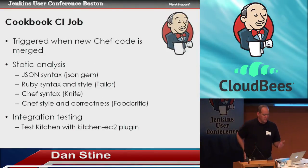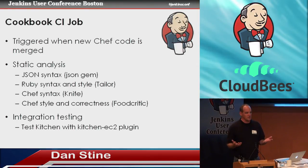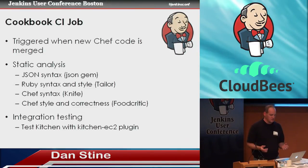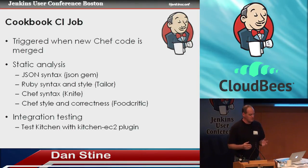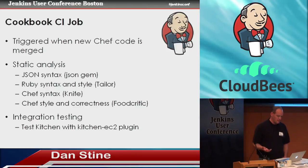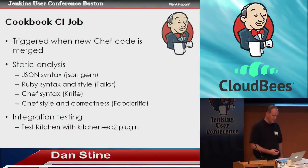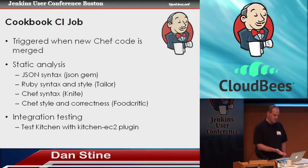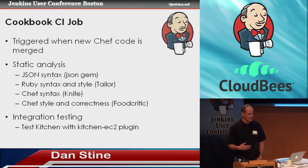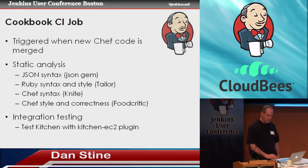In the Java world we have tools like Checkstyle and FindBugs for static analysis. In the Chef and Ruby ecosystem we have corresponding tools: we can check JSON syntax, Ruby syntax, and Chef-specific syntax with Food Critic. When you name a tool 'Chef,' it permits a wide variety of names for tools that grow up around it in the ecosystem. For integration testing we use Test Kitchen with the EC2 driver — there's an array of drivers for different cloud providers — and that's how we spin up nodes.